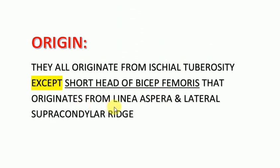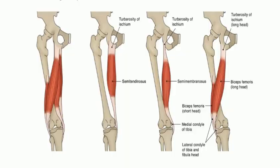The short head of the biceps femoris originates from the linea aspera and the lateral supracondylar ridge. As the name indicates, biceps means it has two heads: the long head, which originates from the ischial tuberosity, and the short head. This image shows all three hamstring muscles — semitendinosus, semimembranosus, and biceps femoris — originating from the ischial tuberosity.